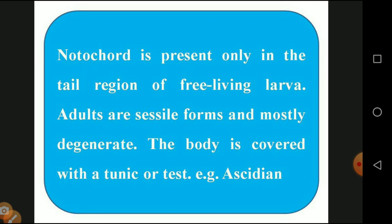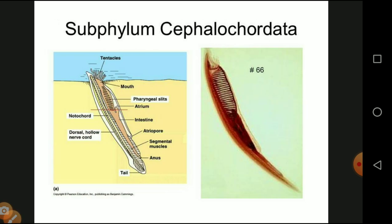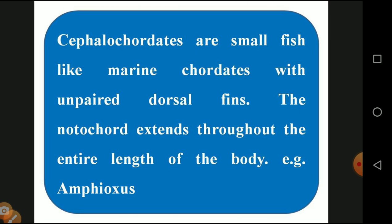Sub-phylum Cephalochordata: these are small fish-like marine chordates with unpaired dorsal fins. They have tentacles by means of which they catch all types of food. The notochord extends throughout the entire length of the body. The notochord is essentially in the form of a spinal cord running the whole body. Example: Amphioxus.